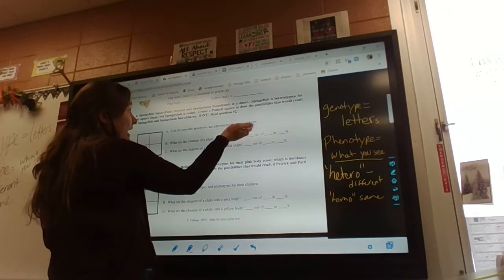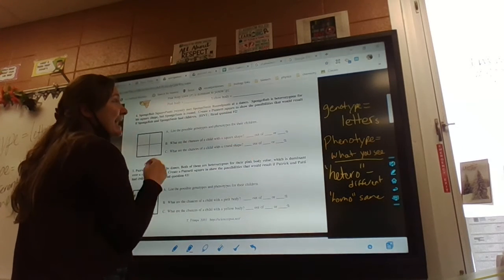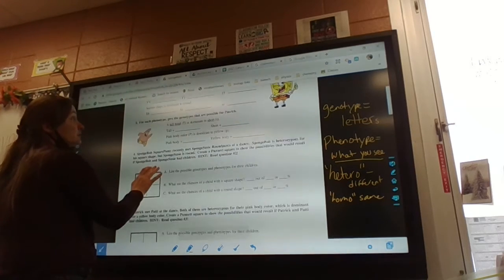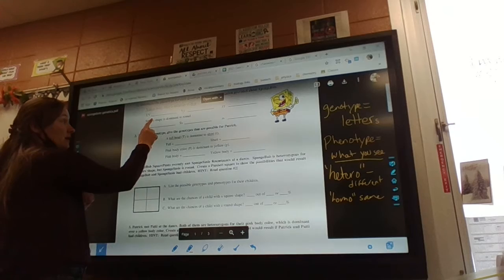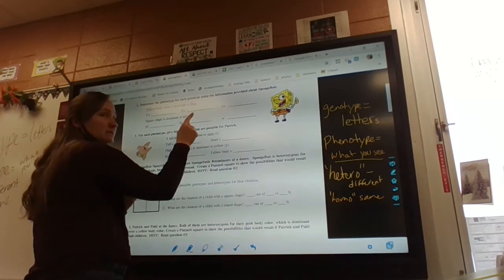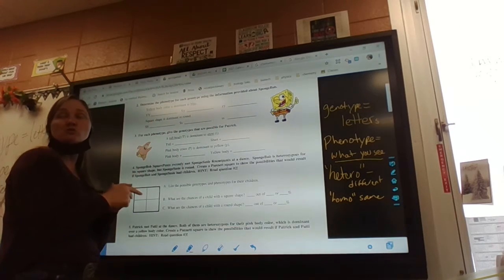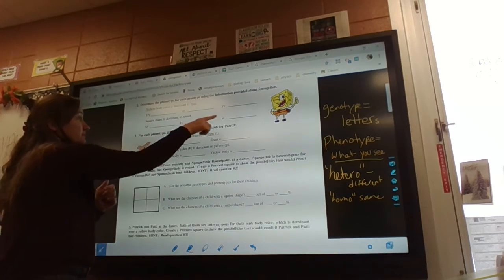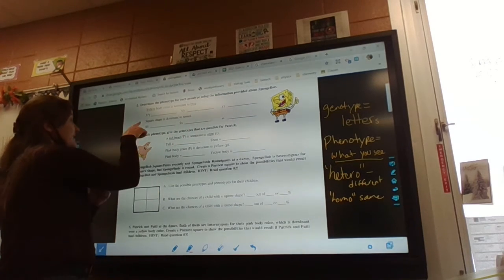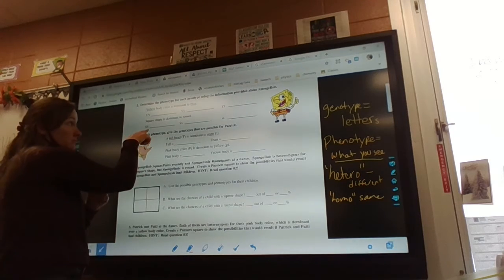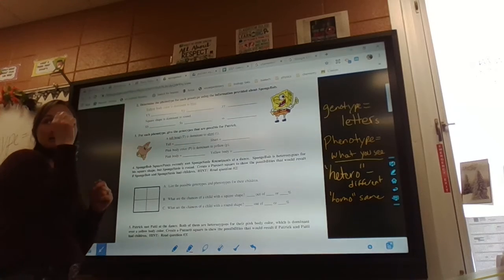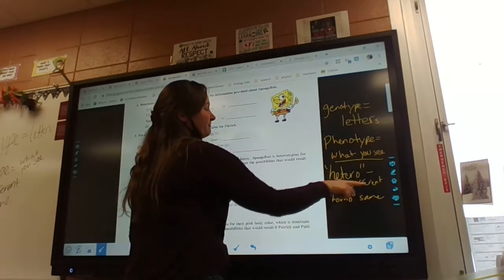SpongeBob is heterozygous for square. If I'm looking up here at square, these are my three possible genotypes. Which one would be hetero? This one, that one, or that one? That would be homo. This one - S capital and lowercase - is a mixture. That's why it's different.